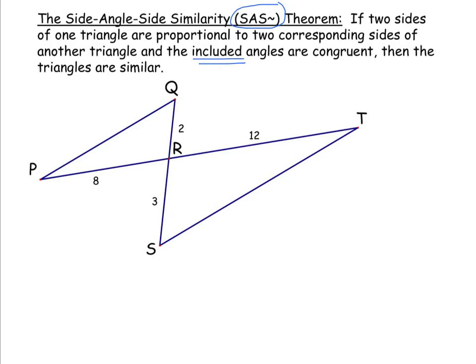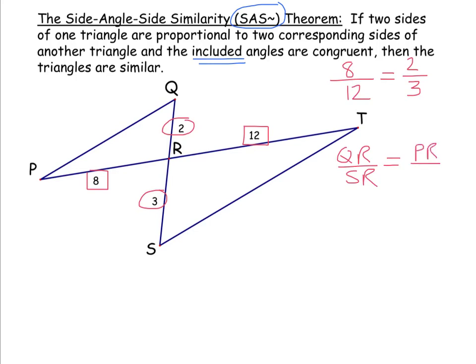Matching shorter sides to shorter and larger to larger, we look at the ratios of corresponding side measures: we have 2 to 3, and 8 to 12, which reduces to 2 to 3 by dividing out a common factor of 4. So we have two sets of proportional corresponding sides: QR to SR equals PR to TR.